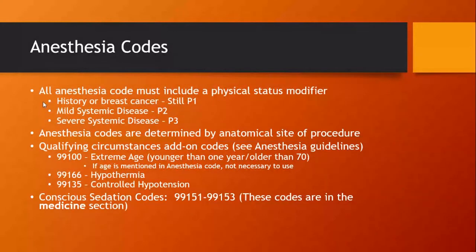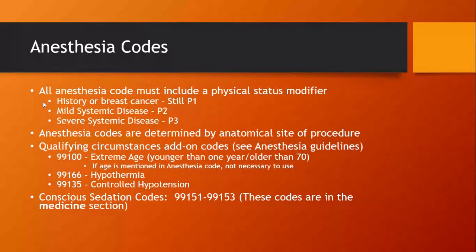Anesthesia codes are determined by the anatomical site of the procedure. It's one of the smallest sections at the beginning of our CPT book, broken down starting with the head and going down to the feet. Qualifying circumstances add-on codes are in the anesthesia guidelines — the two pages before the anesthesia section. The ones you're going to see are 99100. Keep in mind, if age is mentioned in an anesthesia code, it's not necessary to use that — that's a redundancy.